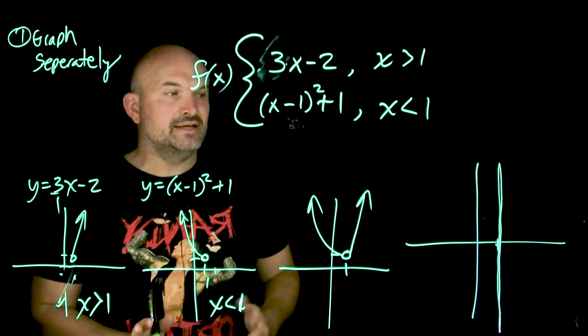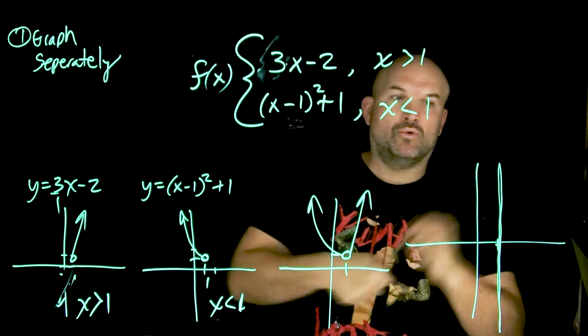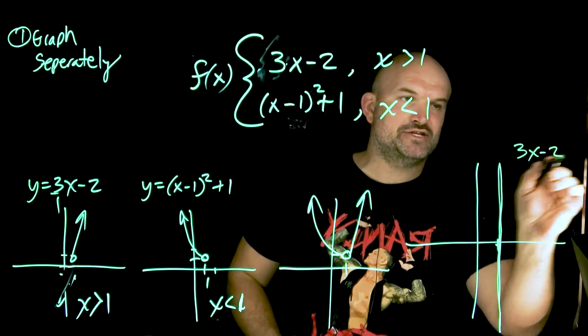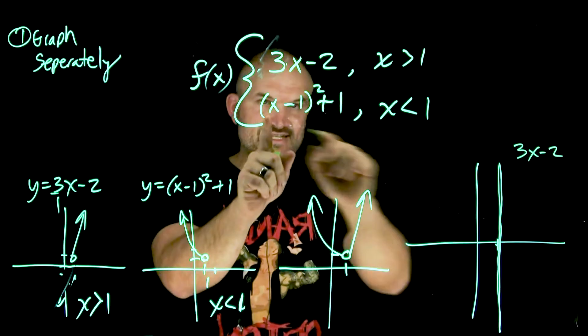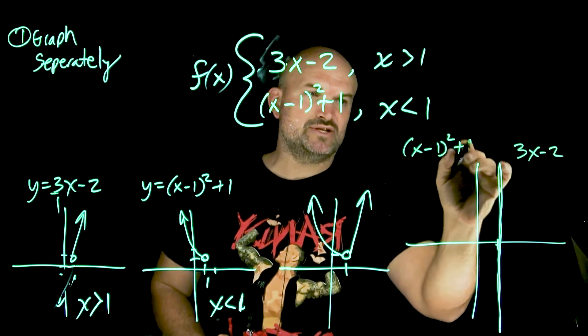So I graph this vertical line here. Now, what this vertical line is telling me is, to the right, one graph is going to be true, right? So x is greater than 1. That's going to be the equation 3x minus 2. And then to the left, this equation is going to be true, which is going to be x minus 1 quantity squared plus 1.